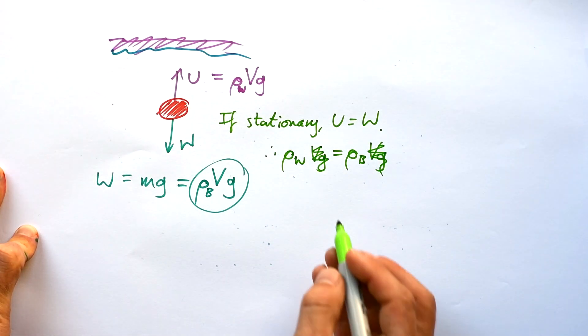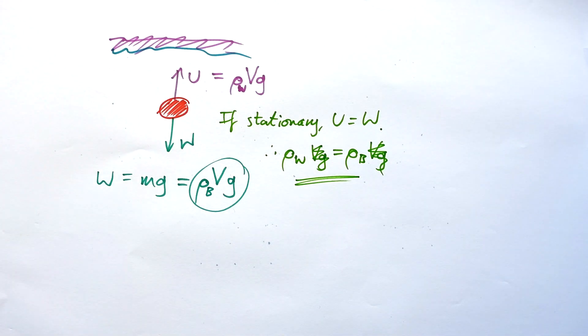And we can see that, therefore, the densities must be equal. We've just proven that if an object floats stationary inside a liquid, that must mean that it has the same density as that liquid.